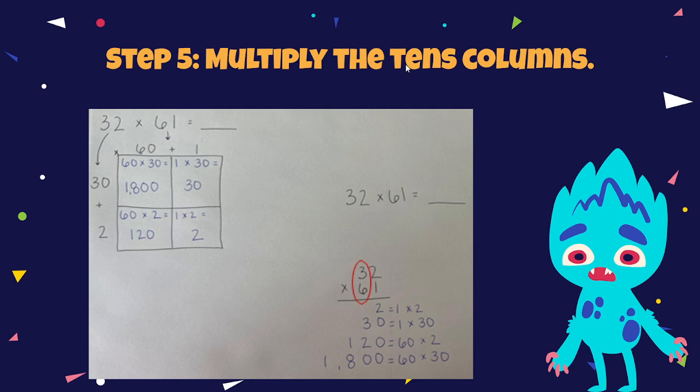Finally, in step number 5, multiply the tens column. You're going to take the 60 and the 30 and multiply it together, which will give you 1,800. As you can see, represented in the area model as well. 30 times 60 will give you 1,800.